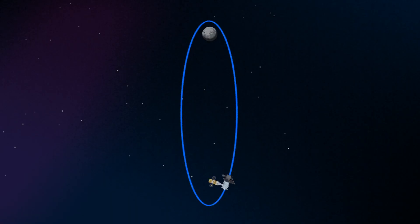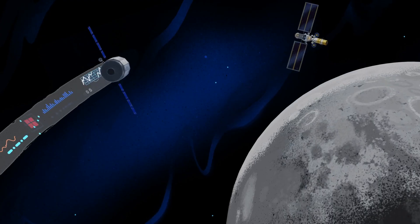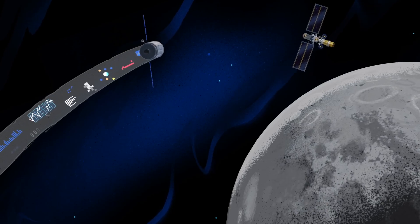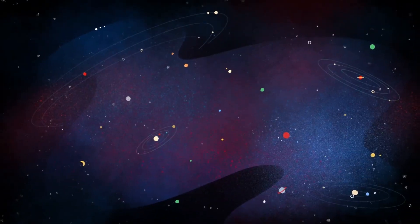But the real key in this approach is placing Gateway in a unique halo orbit to perfect the maneuvers needed for Mars missions. And with the growing list of commercial and international opportunities, Gateway is the ideal hub between Earth and all that lies beyond.